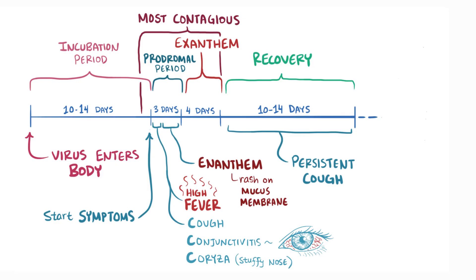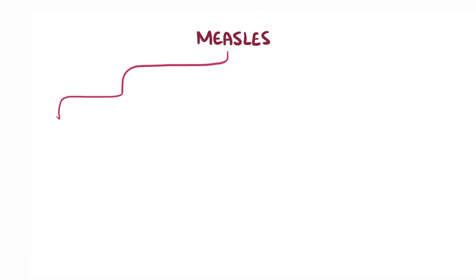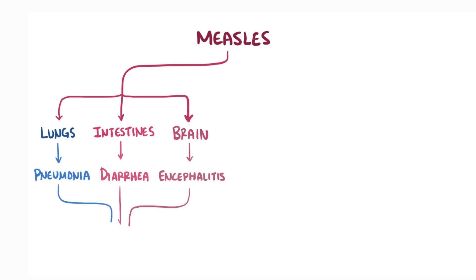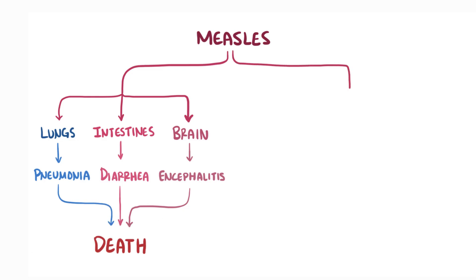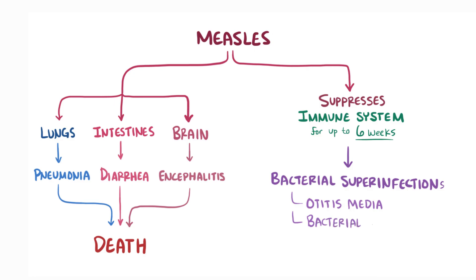Once all this is over and someone has recovered from measles, they have lifelong immunity. Since measles affects various organs like the lungs, the intestine, and the brain, it can lead to complications like pneumonia, diarrhea, and on rare occasions encephalitis, all of which can lead to death. In addition, measles can suppress the immune system for up to six weeks, and this can contribute to bacterial superinfections like otitis media and bacterial pneumonia.